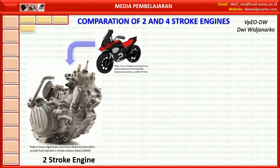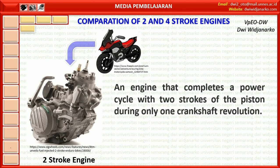A 2 stroke engine is an engine that completes a power cycle with 2 strokes of the piston during only 1 crankshaft revolution. The engine is able to create power after 1 cycle because the intake of gas inside the cylinder and the exhaust of the residual gases occur simultaneously.